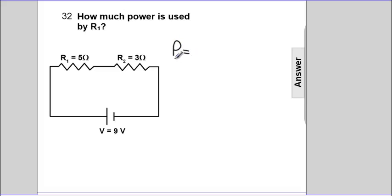Power for 1 is I1 squared times R1. Another way to do it, power 1 is I1 times V1. Or power is V squared over R.